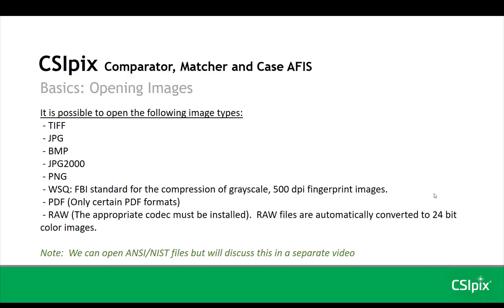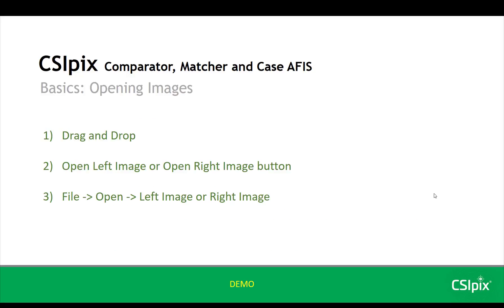We can also open ANSI NIST files, but I'm going to discuss that in a separate video. There are three different ways to open images: you can drag and drop into CSiPix, you can use the open left image or open right image button, or you can go to File, click Open, and then choose left or right image.